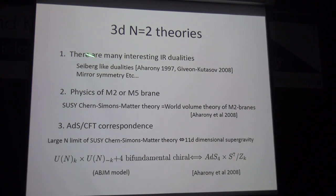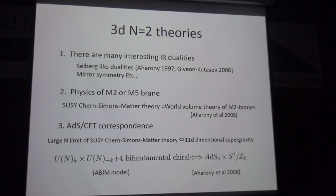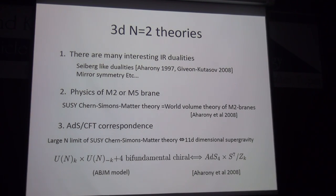The second motivation is the physics of M2 branes and M5 branes. A particular class of supersymmetric Chern-Simons matter theory is realized as the worldvolume theory of M2 branes, so studying these theories is important to understand M2 brane dynamics. When we wrap M5 branes on a direct product of a 3-manifold, another class of supersymmetric Chern-Simons matter theory arises, making it also important to study these theories.